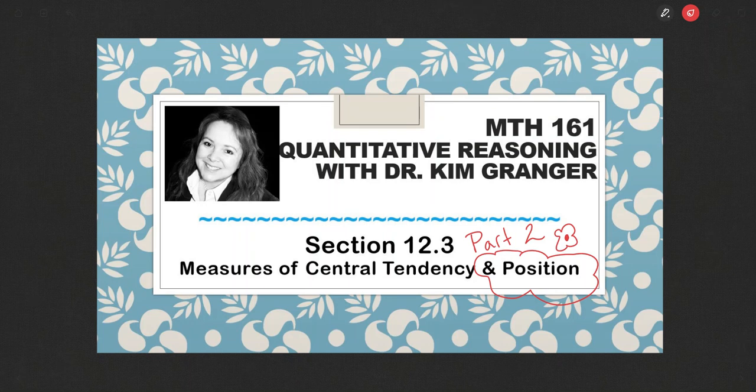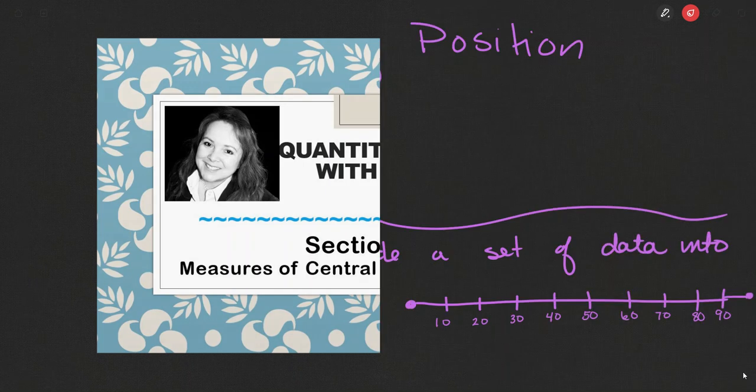We will continue our study of the measures of central tendency and position topic by looking here at part two of this topic, and this is the measure of position. This is the next step in our study of statistics.